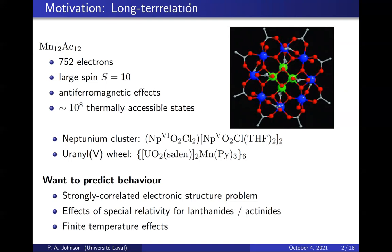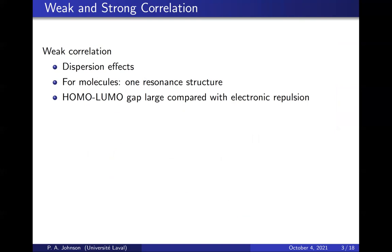So what do we mean by strong correlation? I understand that not everyone defines it in the same way, so we'll briefly describe the way we think about it. Weak correlation is anything that's described well by one molecular orbital diagram plus small corrections. If Hartree-Fock is the correct qualitative picture of what is happening physically, you are a weakly correlated system. The HOMO-LUMO gap is large compared with the electronic repulsion of the valence electrons.